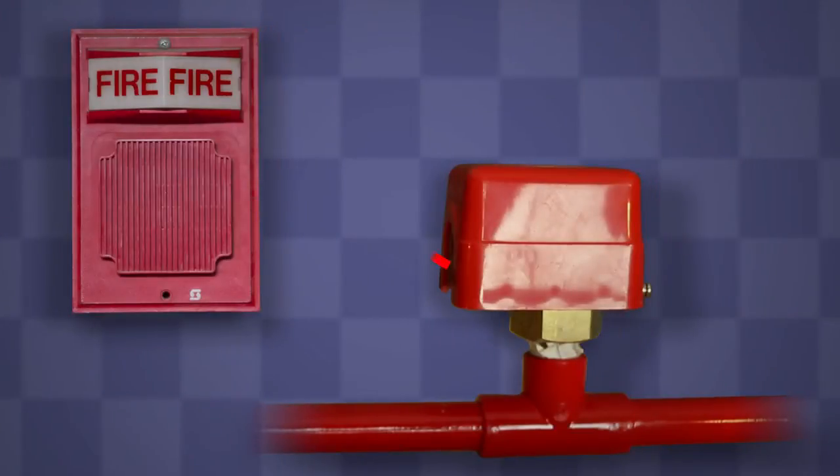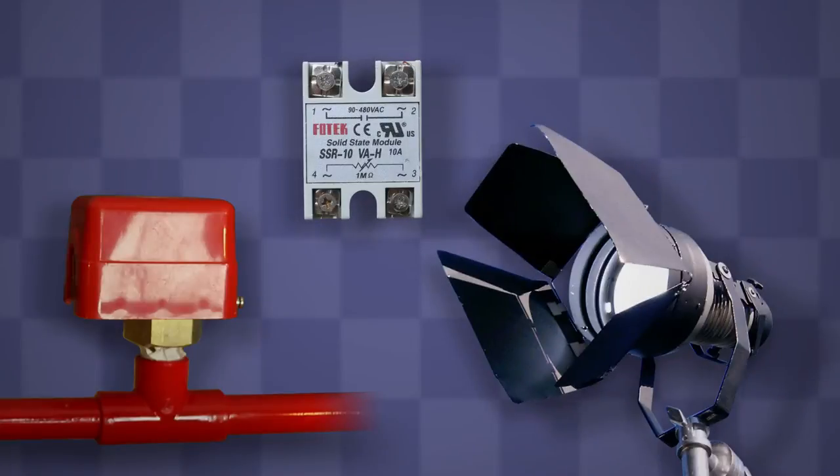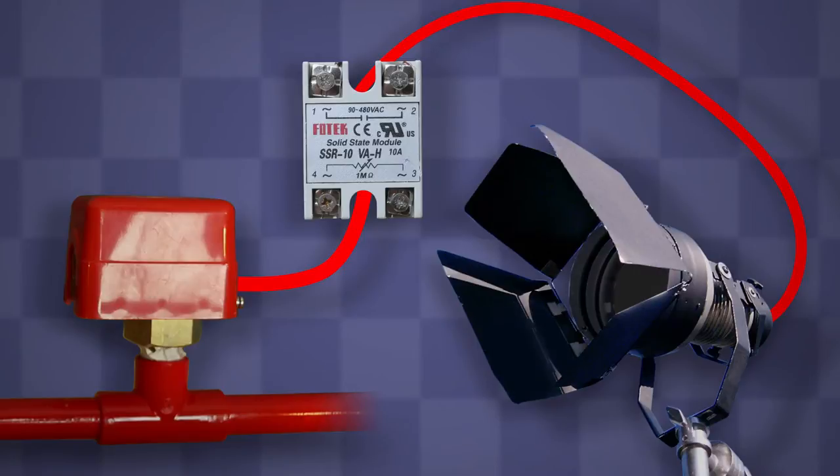In a real system, the flow switch sets off the fire alarm. But in this experiment, we're using it as a very important safety mechanism. When the sprinkler head goes off, it immediately cuts power to the light.